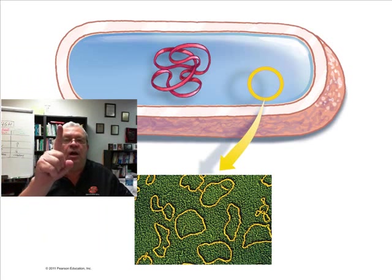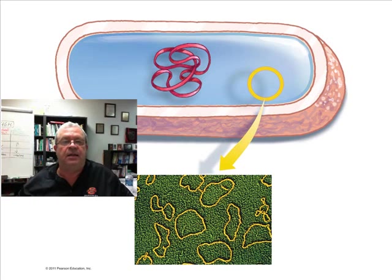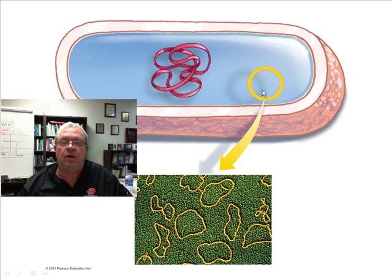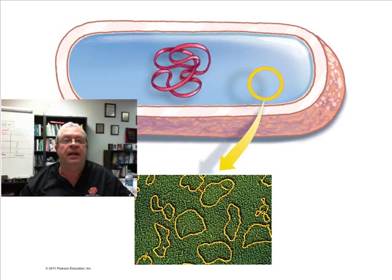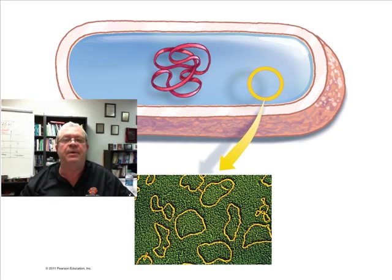Bacteria cells have one large circular chromosome. Now, what's the deal with plasmids? This little yellow guy over here represents a plasmid. What is a plasmid? It is similar to the chromosome in some ways, except it's a tiny little circle. Plasmids are DNA — very small circles of DNA, also found only in prokaryotic cells, only in bacteria cells.